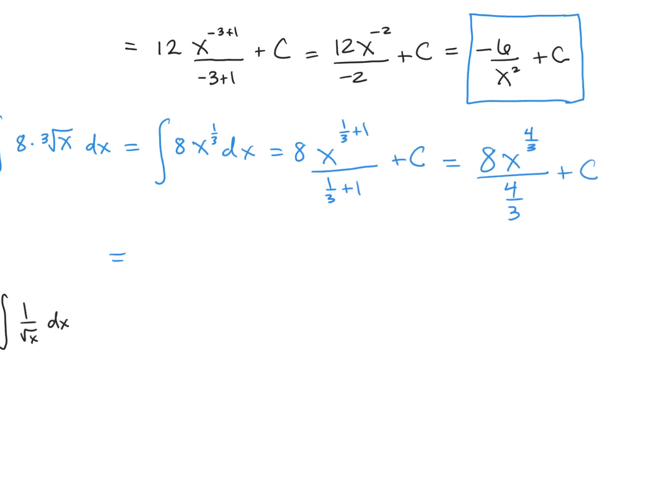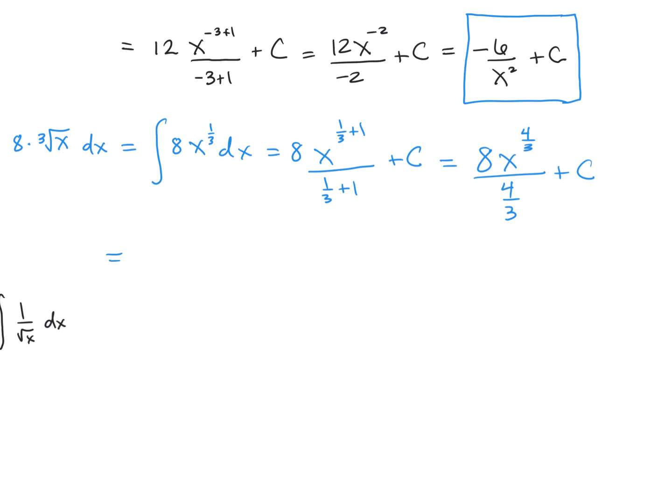And then we can go ahead and multiply it by the reciprocal when we're dividing by a fraction. So we have the 8 already there, times 3/4. And we might as well rewrite that as a radical. That is going to be the cube root of x to the 4th plus C.